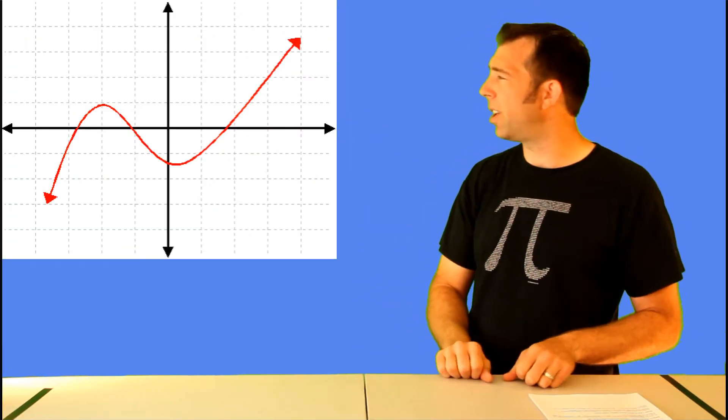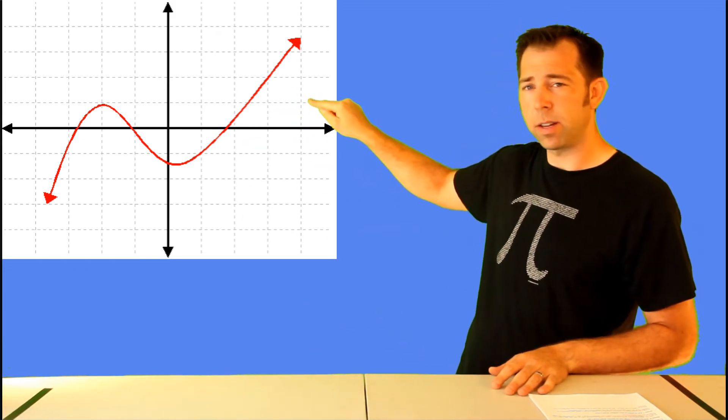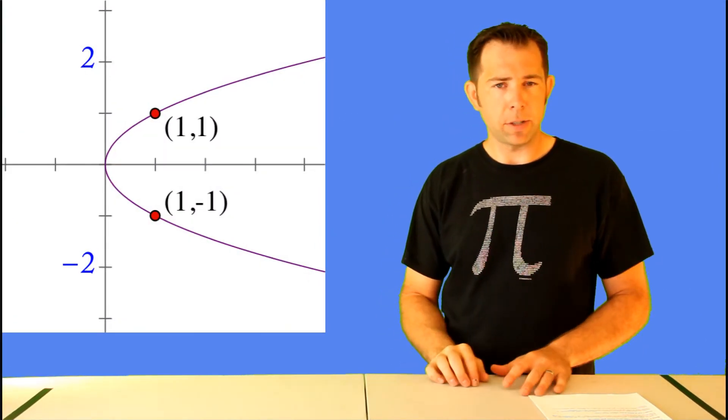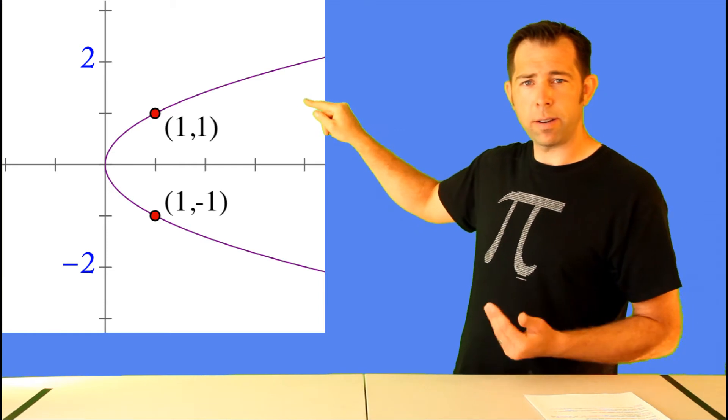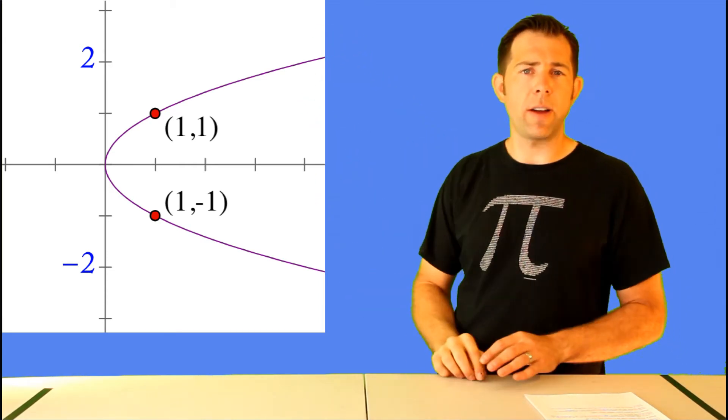So here we have a graph that is a function, and you can tell it's a function because every x-value on this graph corresponds to exactly one y-value. This graph, on the other hand, does not represent a function because you can see this x-value of one maps to a positive one and it maps to a negative one. So it's going to two different y-values.